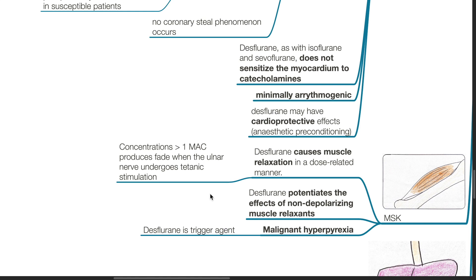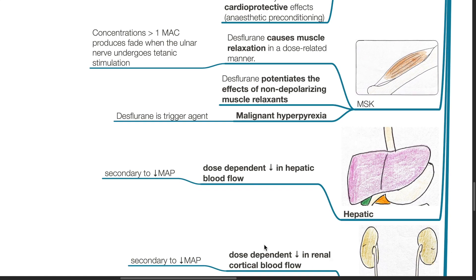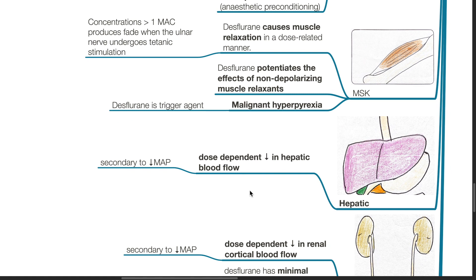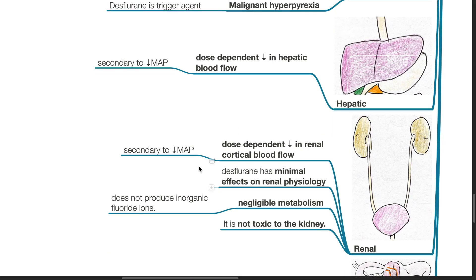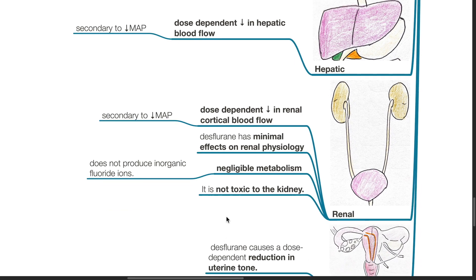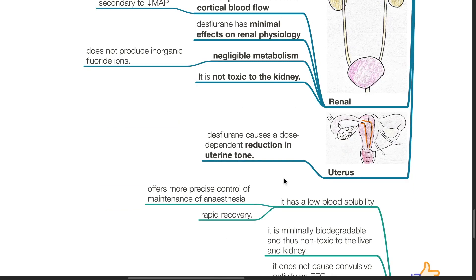Desflurane causes muscle relaxation in a dose-related manner. Concentrations of more than 1 MAC produce fade when the ulnar nerve undergoes tetanic stimulation. Desflurane potentiates the effects of non-depolarizing muscle relaxants and is also a trigger agent for malignant hyperpyrexia. There is a dose-dependent decrease in hepatic blood flow secondary to decreases in MAP. There is a dose-dependent decrease in renal cortical blood flow secondary to decreased MAP. Desflurane has minimal effects on renal physiology, with negligible metabolism and no production of inorganic fluoride ions — it is non-toxic to the kidney. Desflurane causes a dose-dependent reduction in uterine tone.